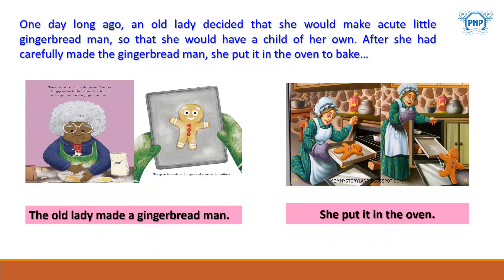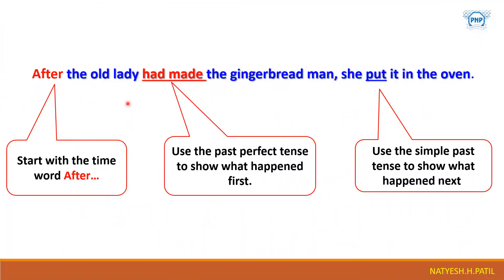Let's check how past tense should be used. "After the old lady had made the gingerbread man, she put it in the oven." Start with the time word 'after' — you can see the word 'after' has come first. After that, they have used past perfect tense to show what happened first: the old lady had made the gingerbread man, because they are speaking about something in the past that was completely finished. She had made it. Now, she put it in the oven — here they have used the simple past tense to show what happened next.